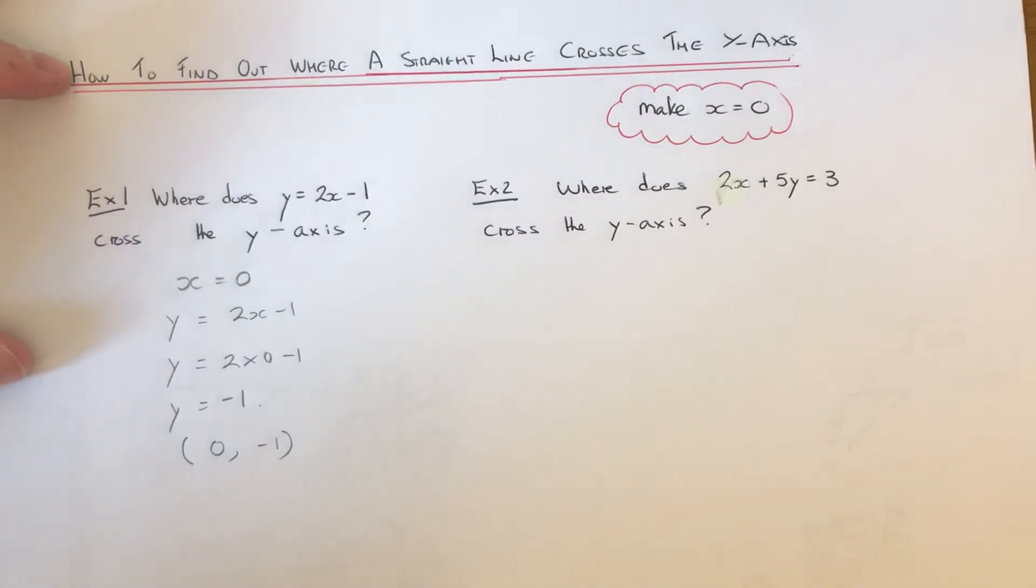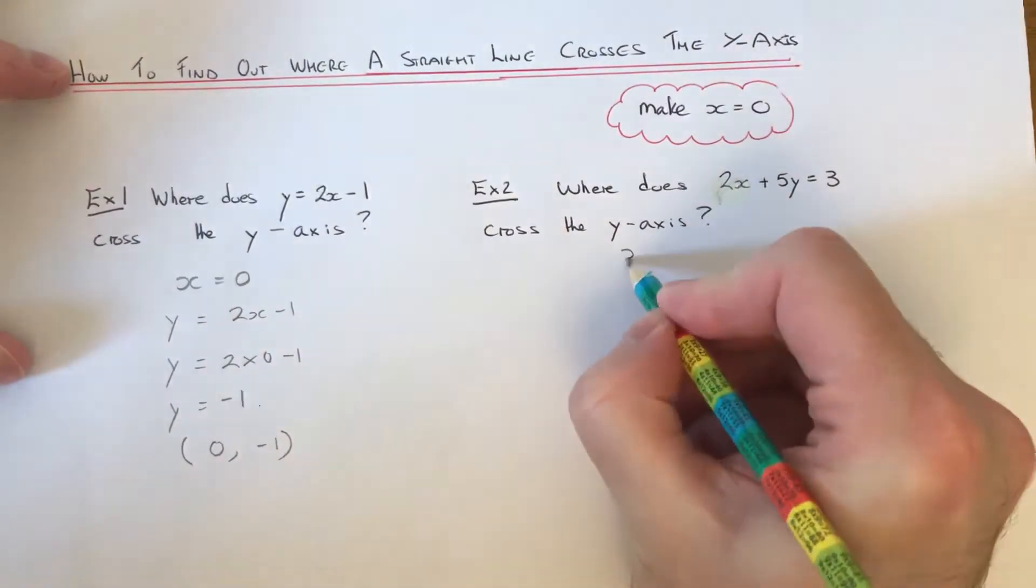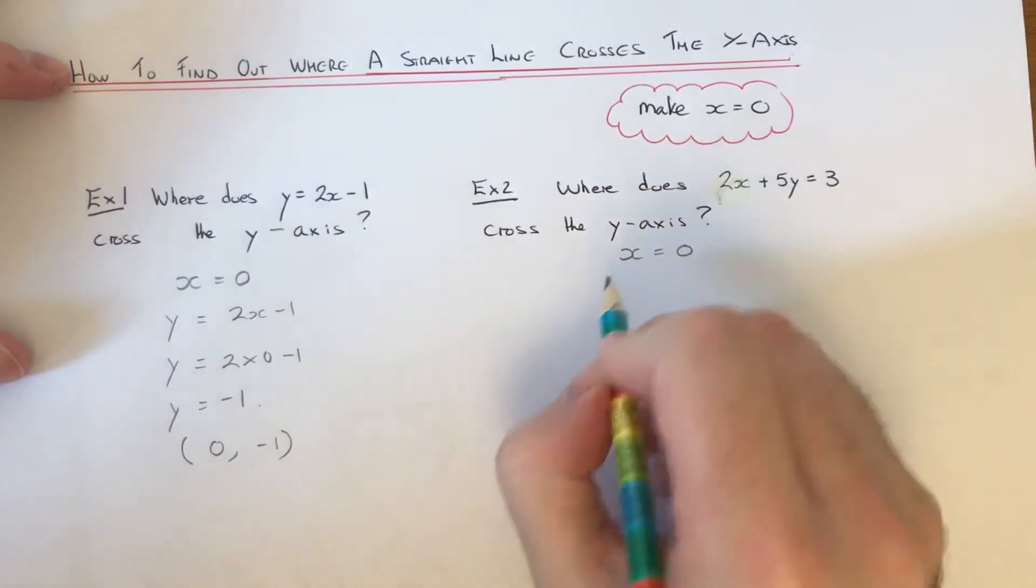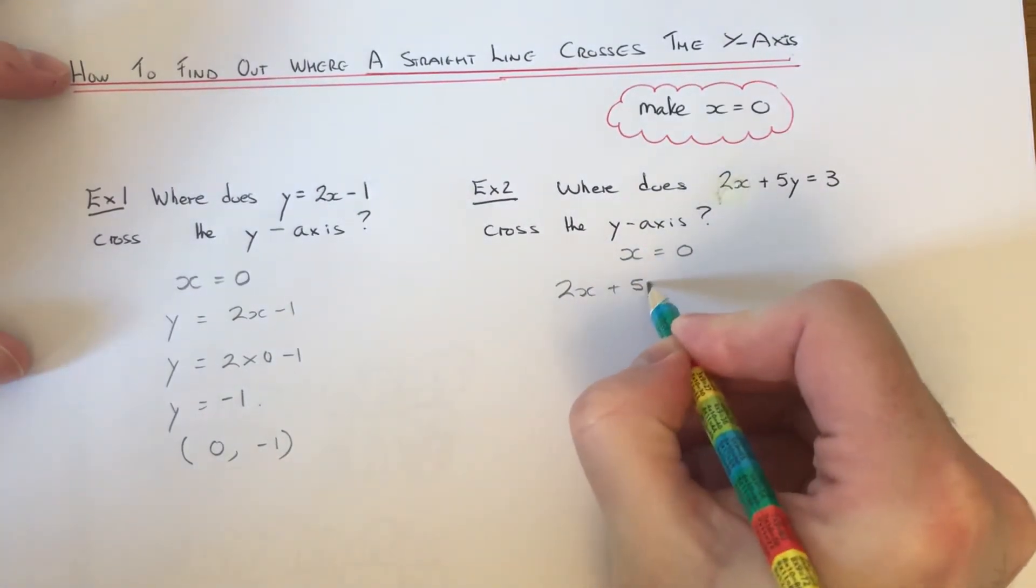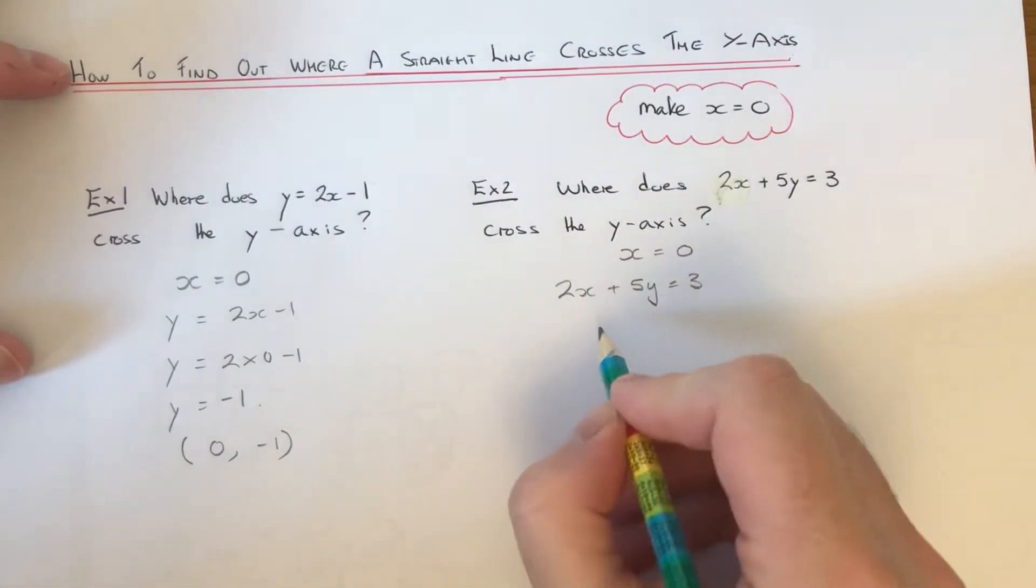So let's have a look at the second example. Where does the line 2x plus 5y equals 3 cross the y-axis? So again we just need to make the x coordinate equal to 0.